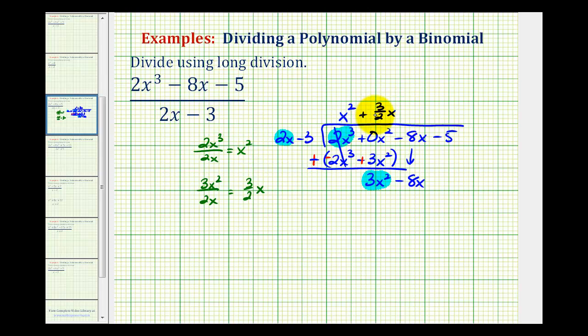Then to find this product, let's go ahead and write it out. We'd have 3 halves x times 2x minus 3. So this first product, notice how the 2's would simplify out and we'll have 3x squared. And for the second product, we're going to have negative 9 halves x.